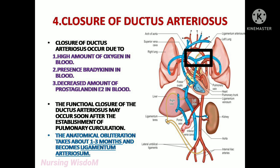The second factor is bradykinin. When the lungs expand for the first time, that produces bradykinin, which travels through the blood flow and reaches the ductus arteriosus shunt, causing it to constrict. The third factor is prostaglandin E2. Previously, the cells in the ductus arteriosus were producing prostaglandin E2 under low oxygen tension, which kept the shunt open. But now with highly oxygenated blood reaching the shunt, the cells will not produce prostaglandin E2, and the decline in prostaglandin E2 also causes the shunt to constrict and close. After closure, the ductus arteriosus becomes the ligamentum arteriosum.